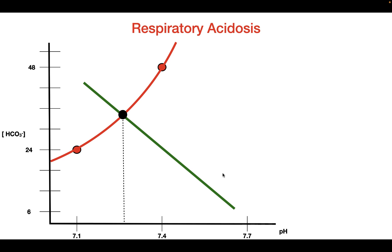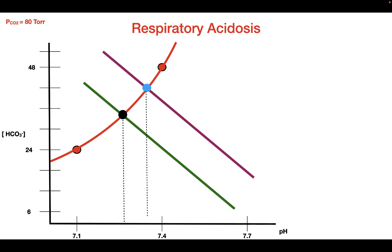The metabolic alkalosis, which is the response for a respiratory acidosis, produces this curve. What you should notice by the intersection from the response is that the pH is now closer to that 7.4 value. So the response to a respiratory acidosis is a metabolic alkalosis.